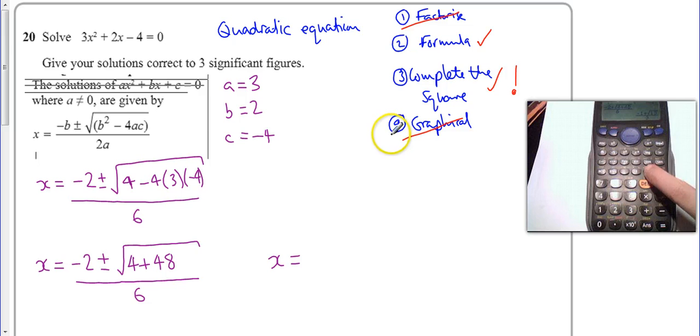And I'm going to get that there. So I know one of the answers is 0.868517091... and that carries on. And then I want to do the same thing but using the negative.